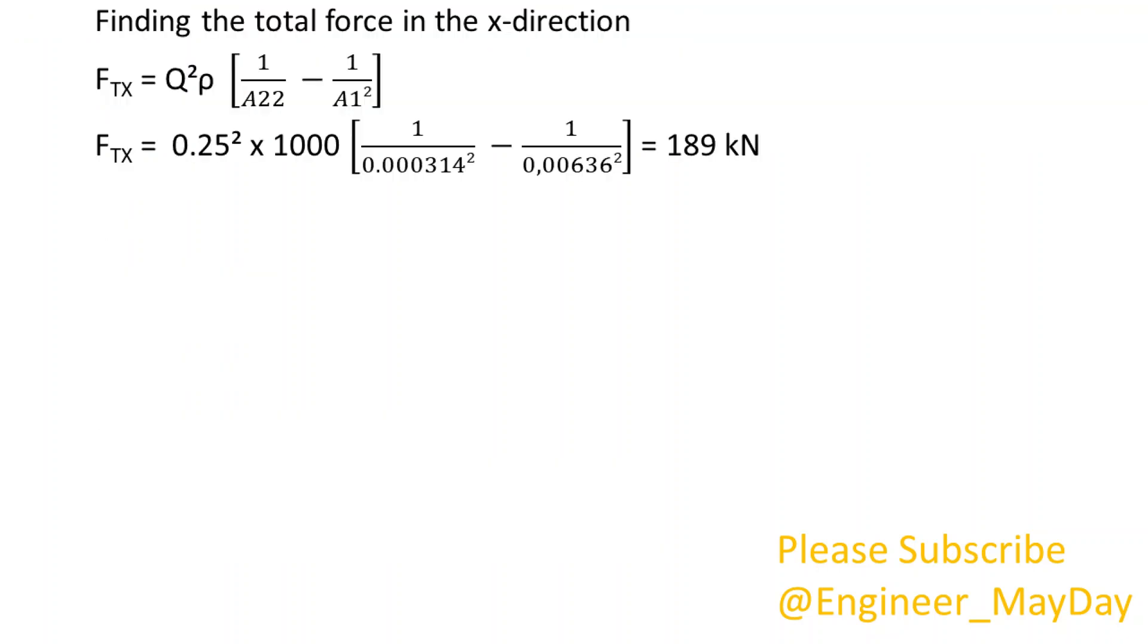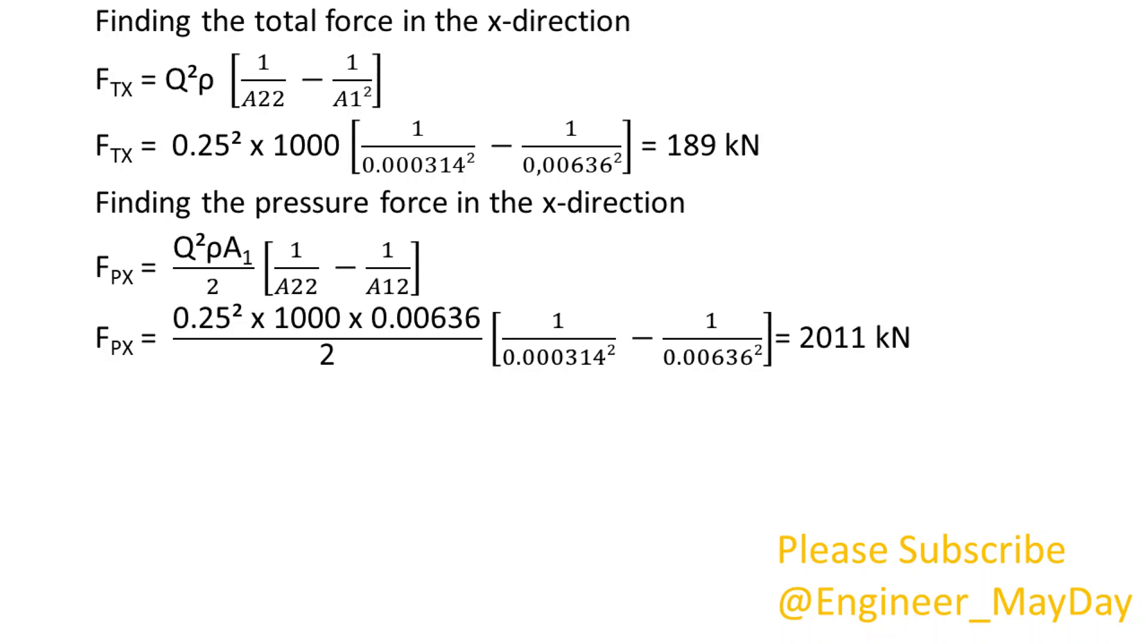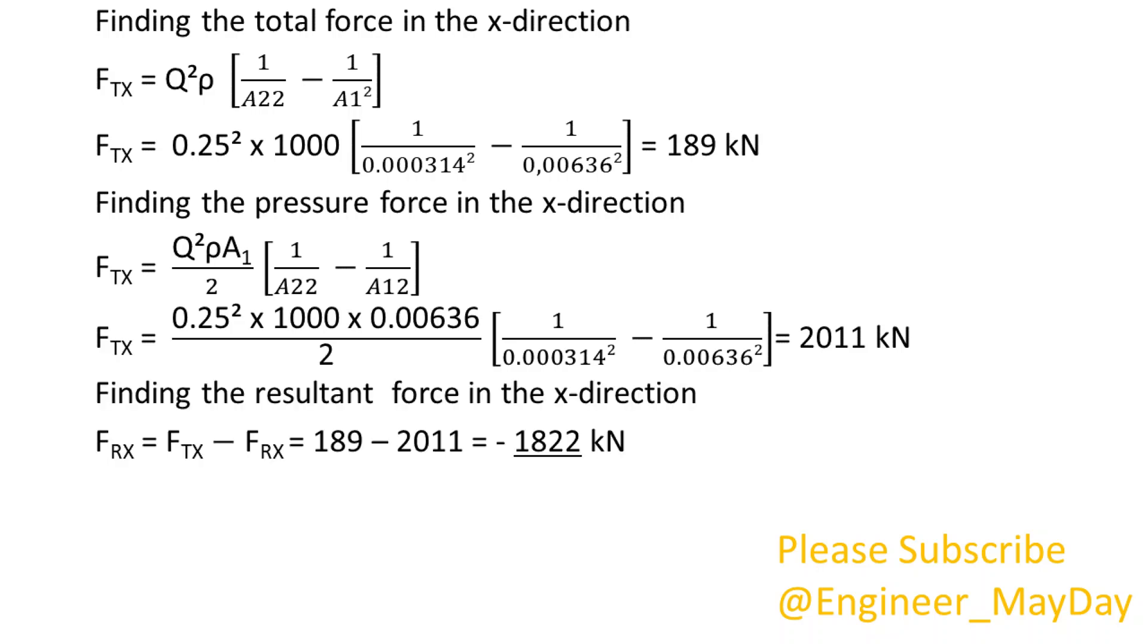Finding the total force in the x direction. FTx equals 189 kilonewtons. Finding the pressure force in the x direction. FPx equals 2,011 kilonewtons. Finding the resultant force in the x direction. Frx equals negative 1,822 kilonewtons.